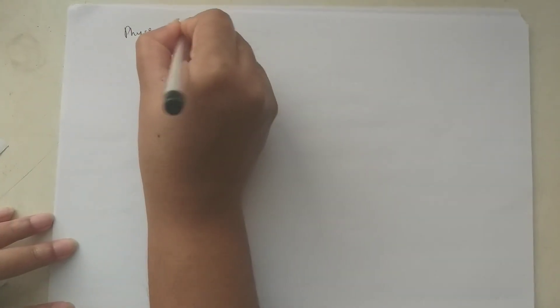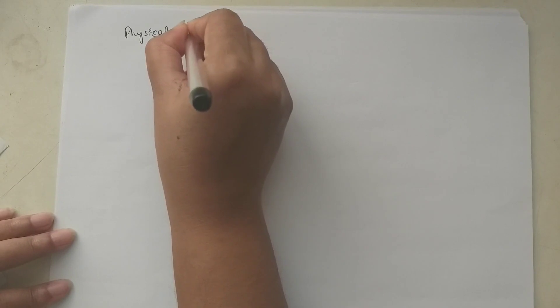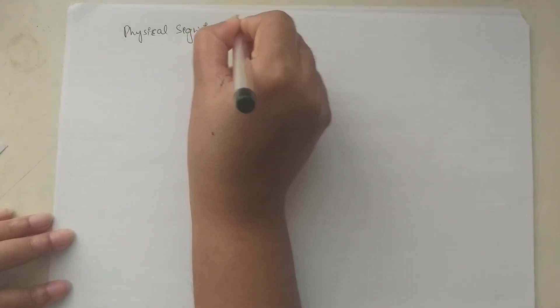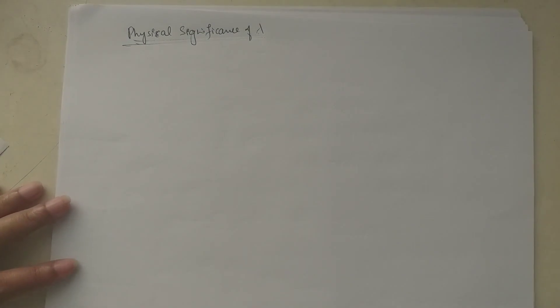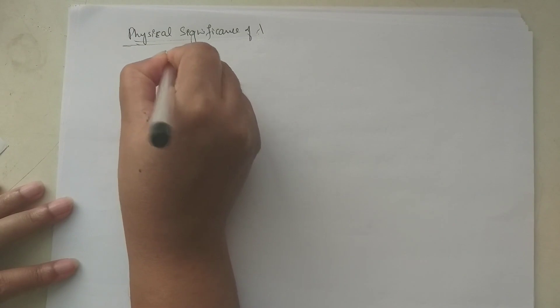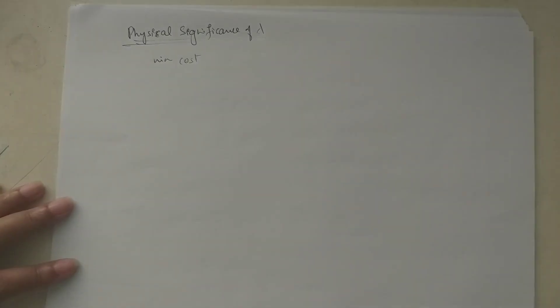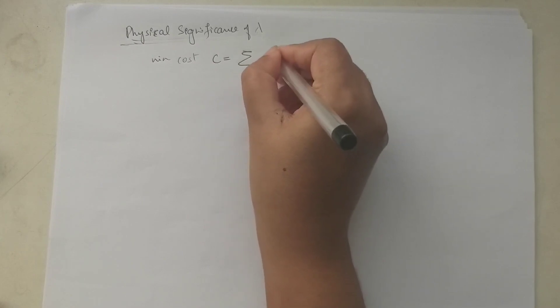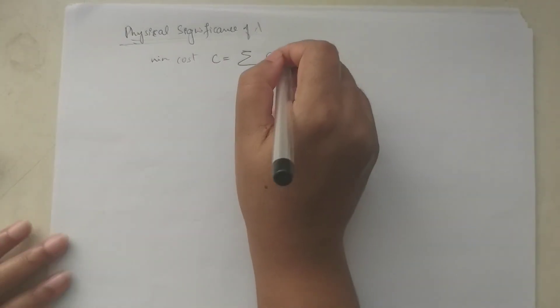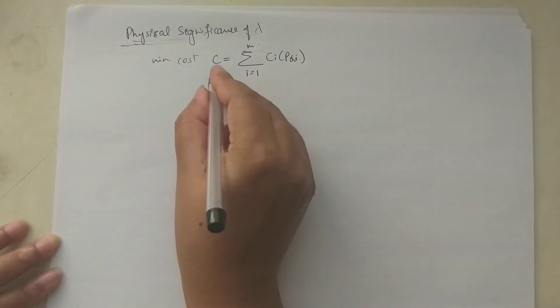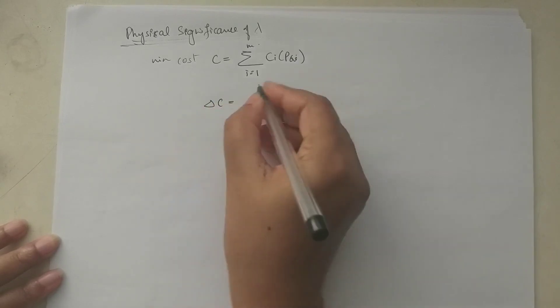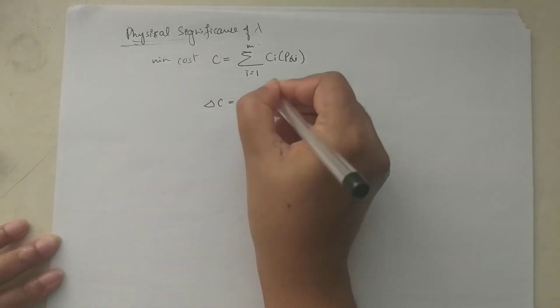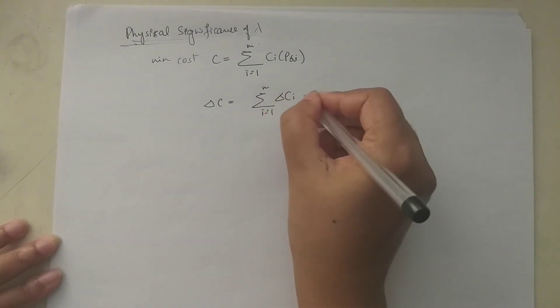Physical significance of lambda: The objective of optimal operation including transmission loss is to minimize the cost function: C = summation of C_i(P_Gi), for i = 1 to m. The small change in cost, delta C, equals the summation of delta C_i.